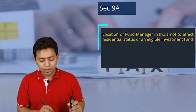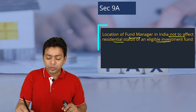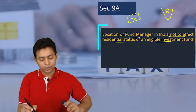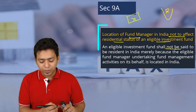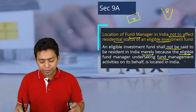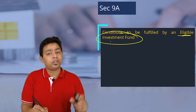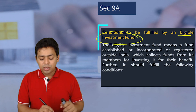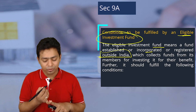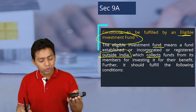We are going to learn a lot of conditions here. The location of the fund manager in India shall not affect the residential status of the eligible investment fund — just because they are having a manager in India, their residential status should not change. An eligible investment fund shall not be said to be a resident in India merely because the eligible fund manager is undertaking fund management activity on its behalf located in India. The eligible investment fund means a fund established, incorporated, or registered outside India — an offshore investment fund — which collects funds from members for investing for their benefit, like a mutual fund.